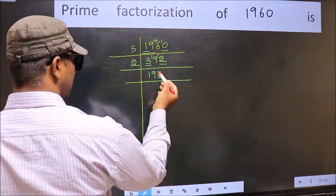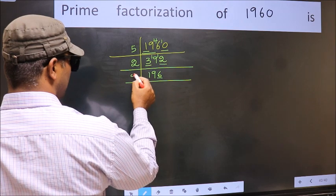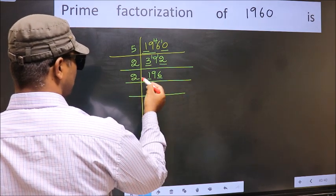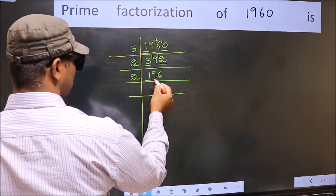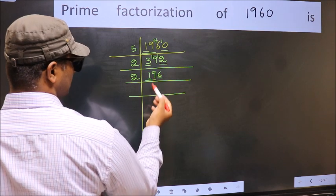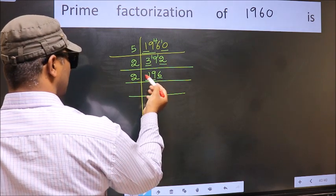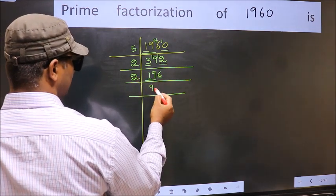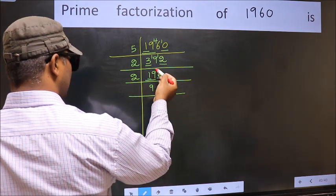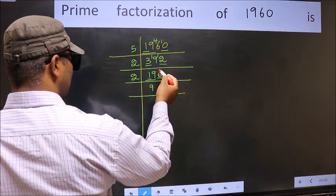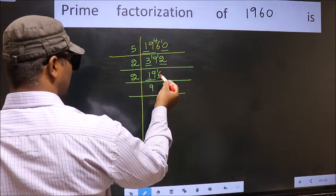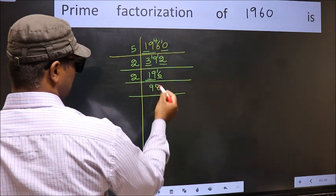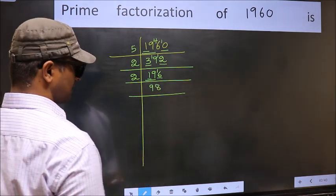Now the last digit is 6, so take 2. First number 1 is smaller than 2, so take 2 numbers: 19. A number close to 19 in the 2 table is 2 times 9 is 18. 19 minus 18 is 1; 1 carried forward gives 16. We get 16 in the 2 table at 2 times 8 is 16.